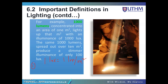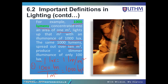So 1 lux = 1 lumen per square meter. In the first example, 1000 lumens over 1 square meter gives 1000 lux. In the second example, the same 1000 lumens spread over 10 square meters gives 100 lux — you divide 1000 lumens by 10 square meters to get 100 lux.